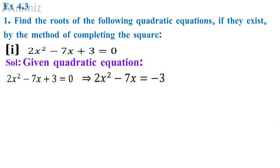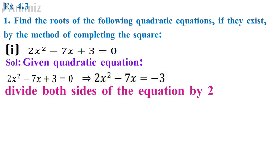When the coefficient of x² is 1, it will be easy for simplification. So divide both sides of the equation by 2. So you will be getting x² - 7/2 x = -3/2.